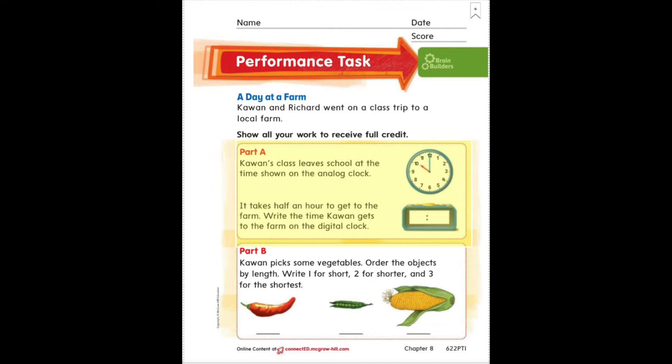Part A says Kawan's class leaves school at the time shown on the analog clock. It takes half an hour to get to the farm. Write the time Kawan gets to the farm on the digital clock. So first graders, not only do you have to read the analog clock, but you have to add a half hour when you write the time on the digital clock. Feel free to pause and work on this problem before moving on in the video.